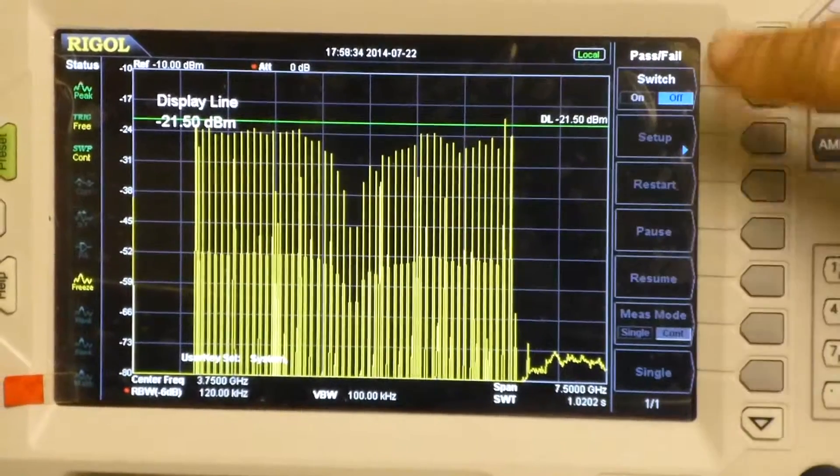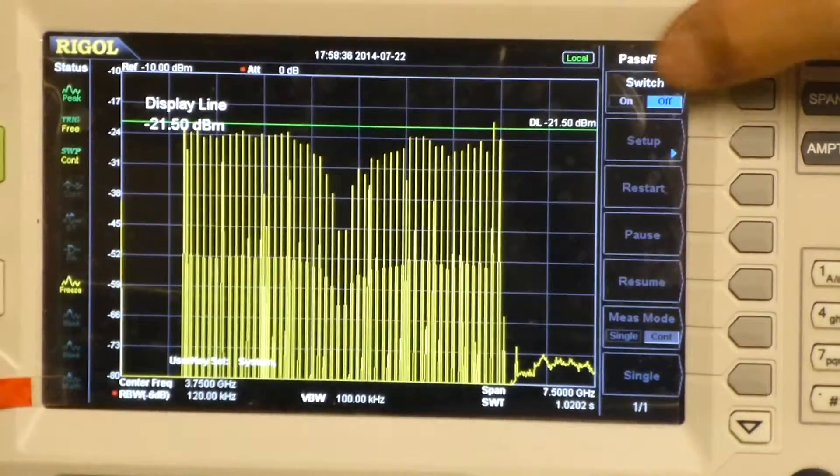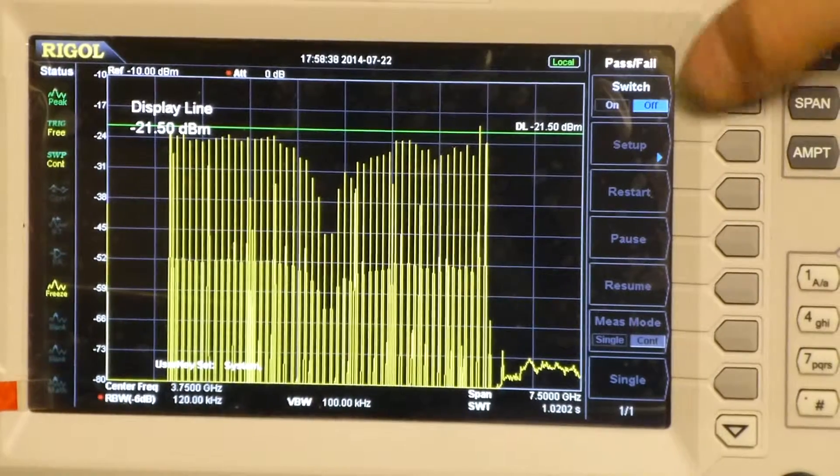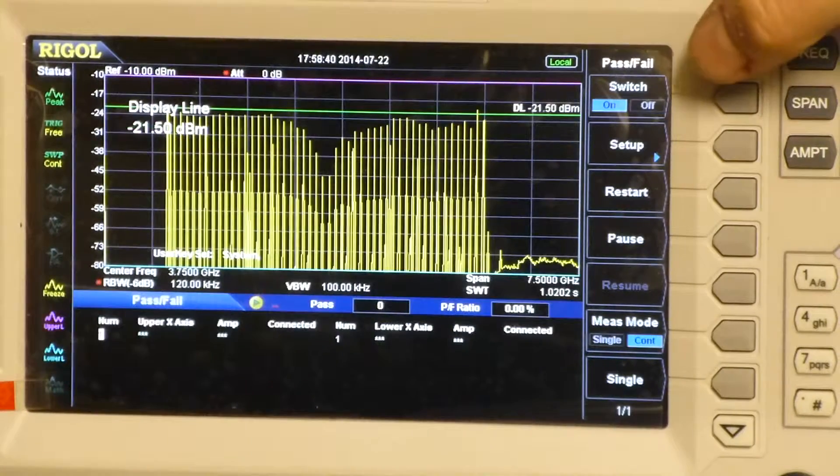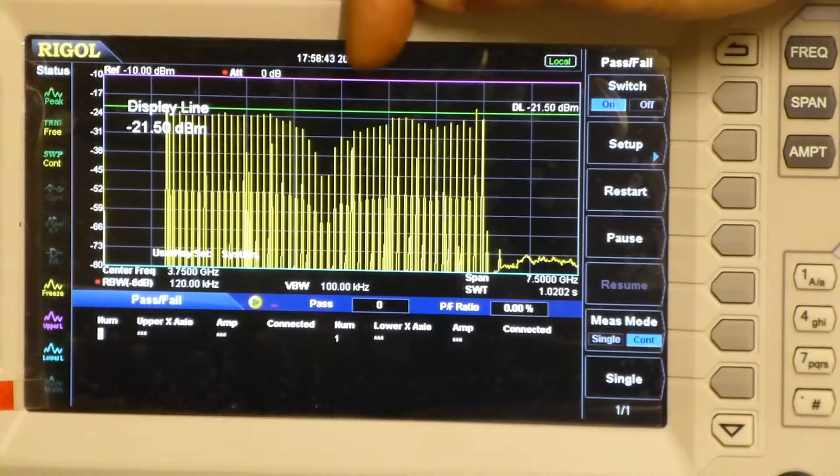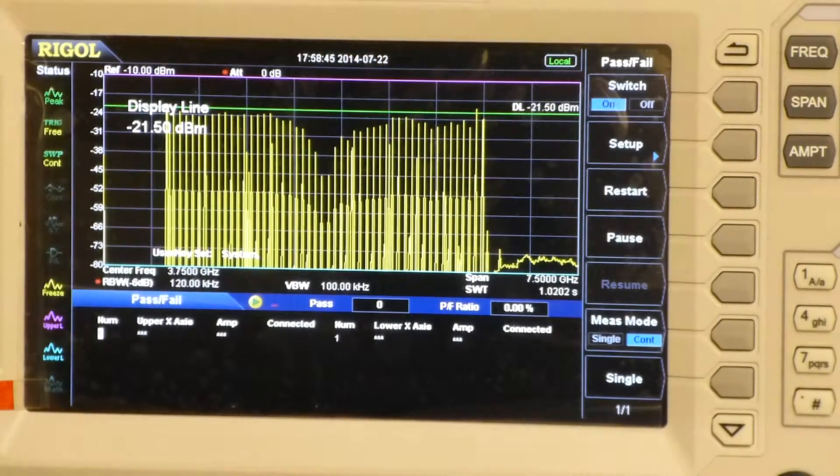If I press that, you will see I have the option to turn on a second kind of line. So if I turn that on right now, you'll see a purple line has also appeared on the screen.